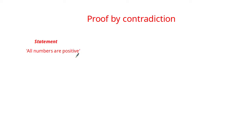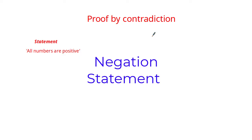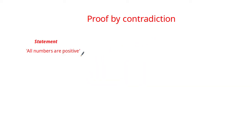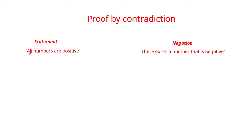That statement would be really difficult to prove or disprove by just using the statement alone, because there are an infinite amount of positive numbers. So using proof by contradiction, what we do is use what's called a negation statement to prove or disprove the original statement. Let's look more into negation statements.